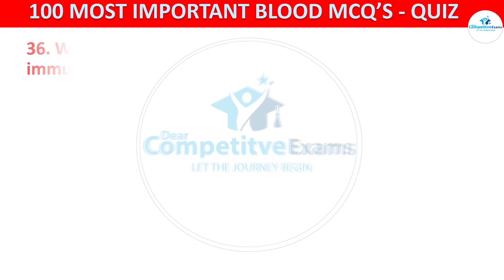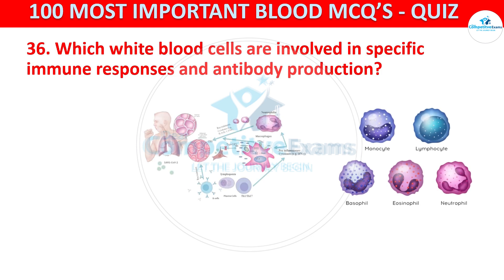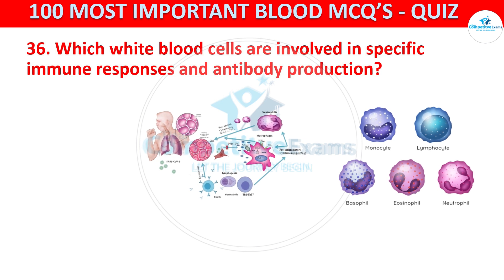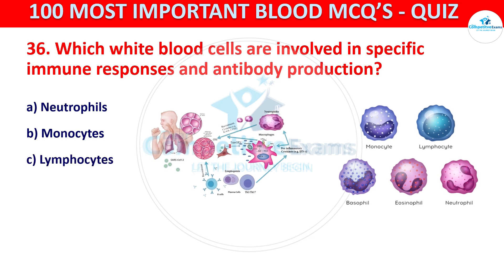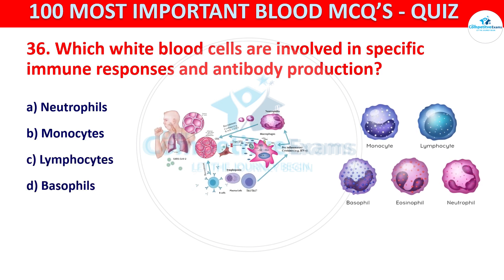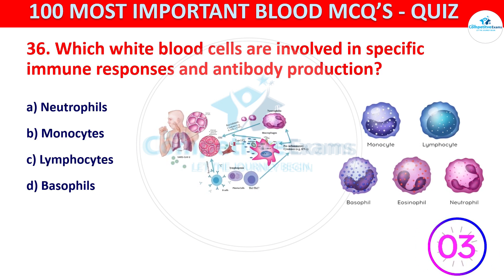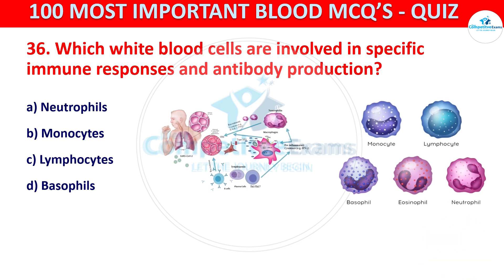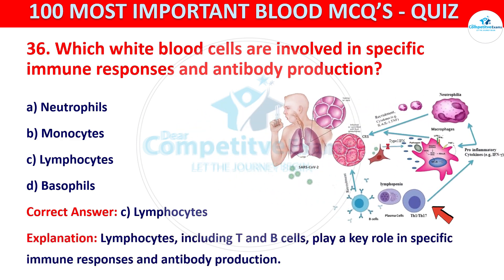Question number 36. Which white blood cells are involved in specific immune responses and antibody production? Your options are neutrophils, monocytes, lymphocytes, or basophils. The correct answer is C, that is lymphocytes. Lymphocytes, including T and B cells, play a key role in specific immune responses and antibody production.